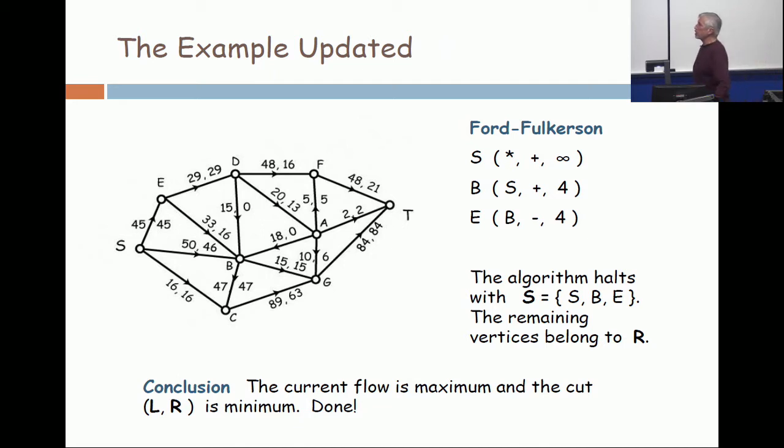So we start by labeling the source, and now we do a scan from the source. We'll look at a whole bunch of vertices, but we'll only be able to label one of them, and that's the vertex B. And now the label on B is S plus and four.